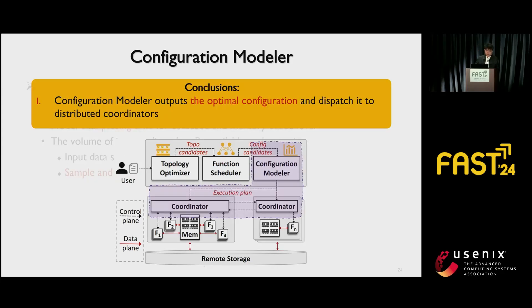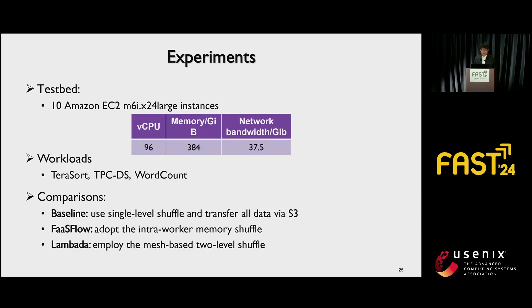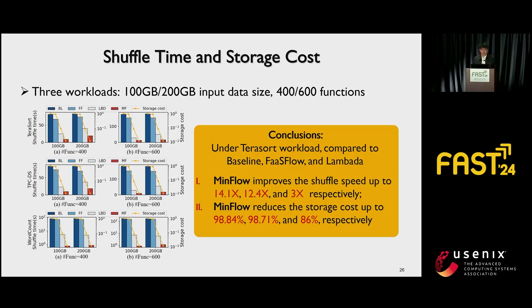In conclusion, the configuration modeler outputs the optimal configuration and dispatches it to distributed coordinators. For evaluation, we ran all experiments in an Amazon EC2 cluster with 10 machines. Each machine has 96-core CPU, 384 gigabytes RAM, and 37.5 gigabit network bandwidth. We employed three widely used workloads: Terasort, TPC-DS, and WordCount. We compared our prototype Mean Flow with baseline, FastFlow, and Lambda, where baseline uses single-level shuffle and transfers all data via S3, and FastFlow adopts interleaved local memory shuffle.